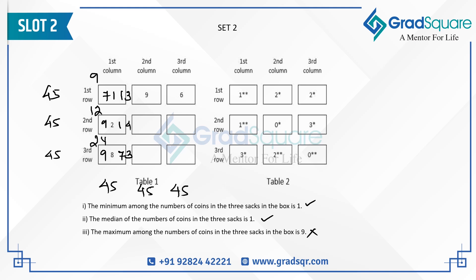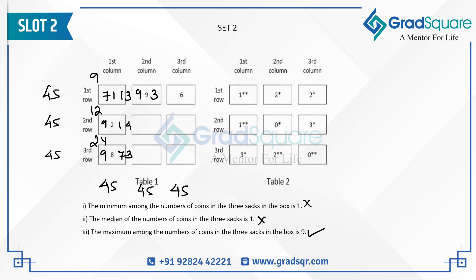The nearby box has a median of nine and two sacks with more than five coins, satisfying only one condition. Since the median is nine, the maximum must also be nine, satisfying the third condition. The other two conditions don't apply. The remaining sack must be less than five. Testing four gives a non-multiple of three; testing two also fails. The only valid value is three, giving a total of 21 and an average of seven.